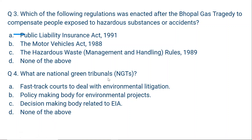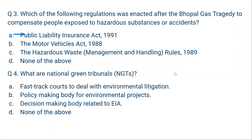Question 4: what are the National Green Tribunals? It is a very common question. Option A: fast track courts to deal with environmental litigation. B: policy making body for environmental projects. C: decision making body related to EIA. D: none of the above. The correct answer is A: fast track courts to deal with environmental litigation. For example, if a factory is contributing to a lot of pollution and somebody files a public interest litigation, all those PILs will be dealt with by the National Green Tribunals because they are fast track courts.